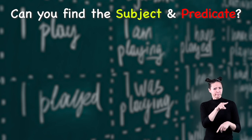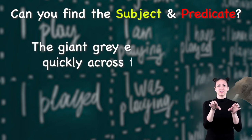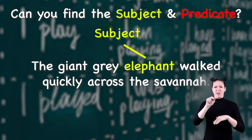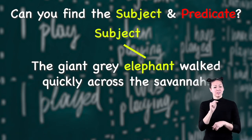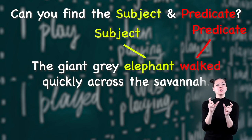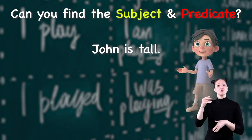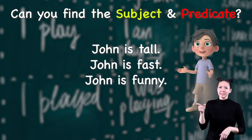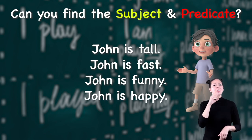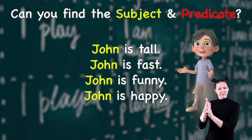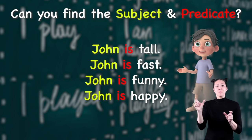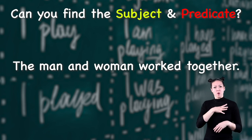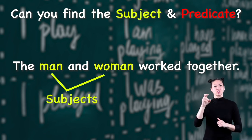Take a look at this sentence and see if you can spot the subject and predicate: 'The giant gray elephant walked quickly across the savannah.' The subject is 'elephant' and the predicate or verb is 'walked.' 'John is tall. John is fast. John is funny. John is happy.' John is the subject in all those sentences and the predicate is the word 'is.'